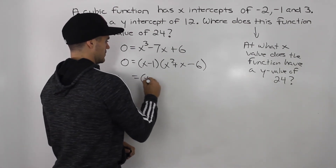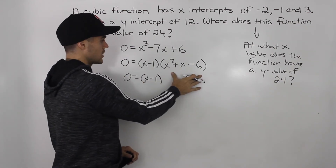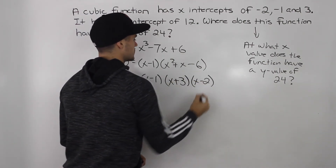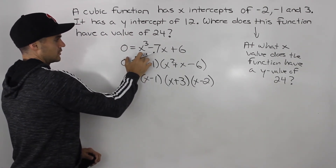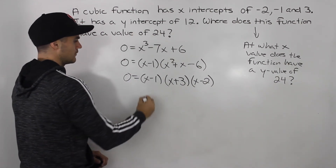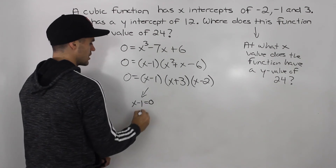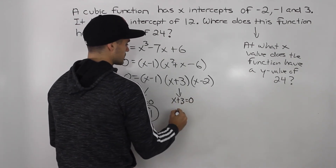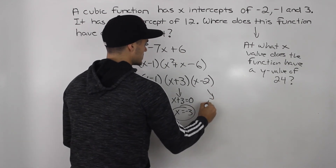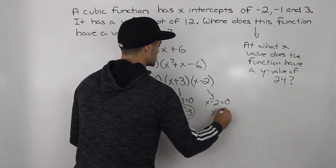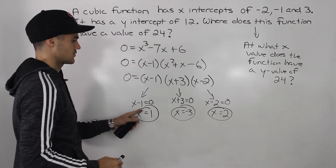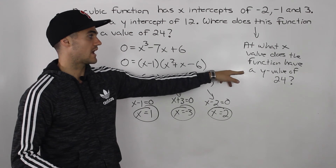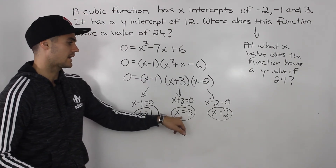We still need to factor the remaining quadratic x² + x − 6, which factors as (x + 3)(x − 2). So the full factored form is (x − 1)(x + 3)(x − 2) = 0. Setting each bracket to zero: x + 3 = 0 gives x = −3; x − 2 = 0 gives x = 2; and x − 1 = 0 gives x = 1. So the three x-values where the function equals 24 are x = 1, x = −3, and x = 2.